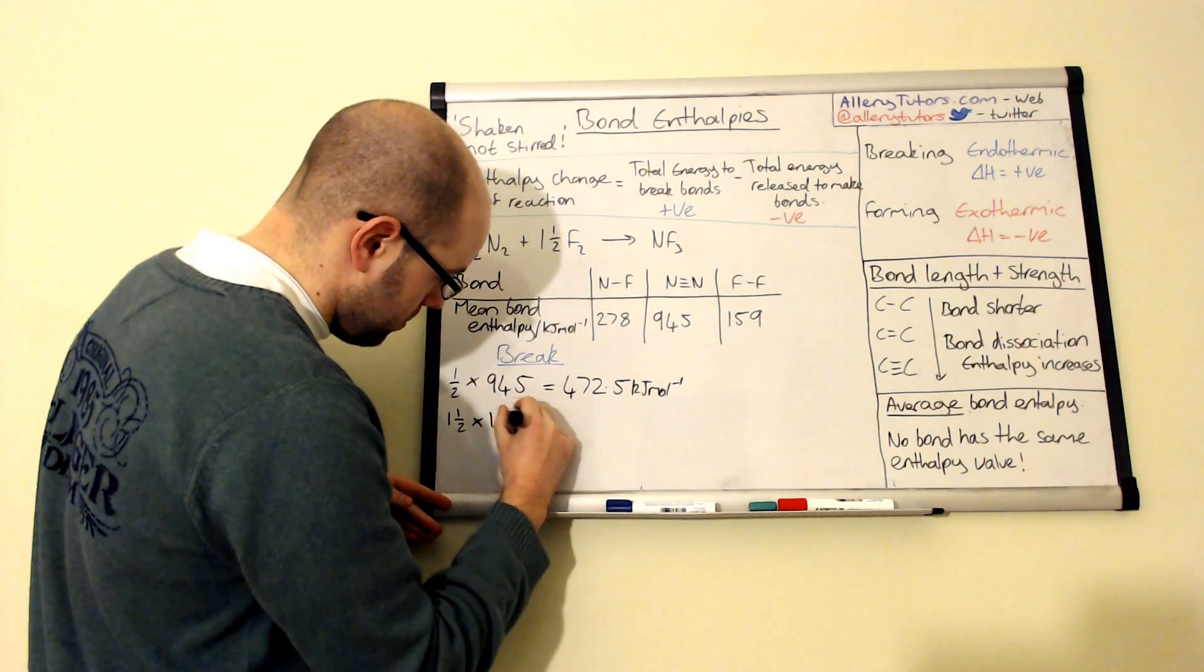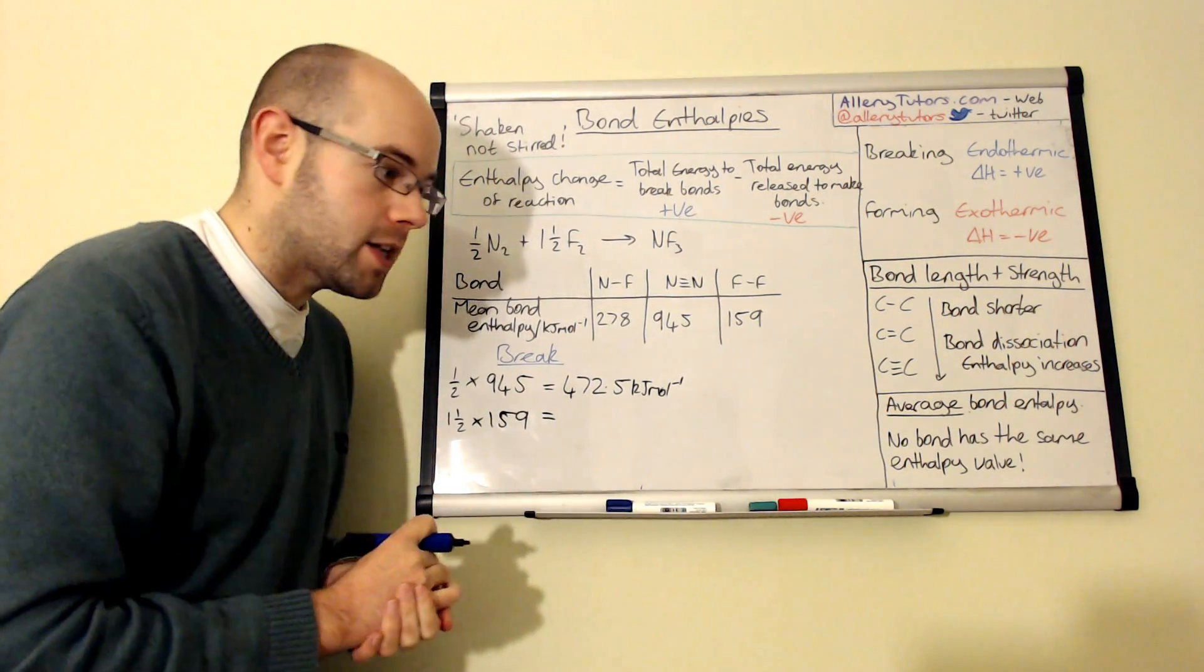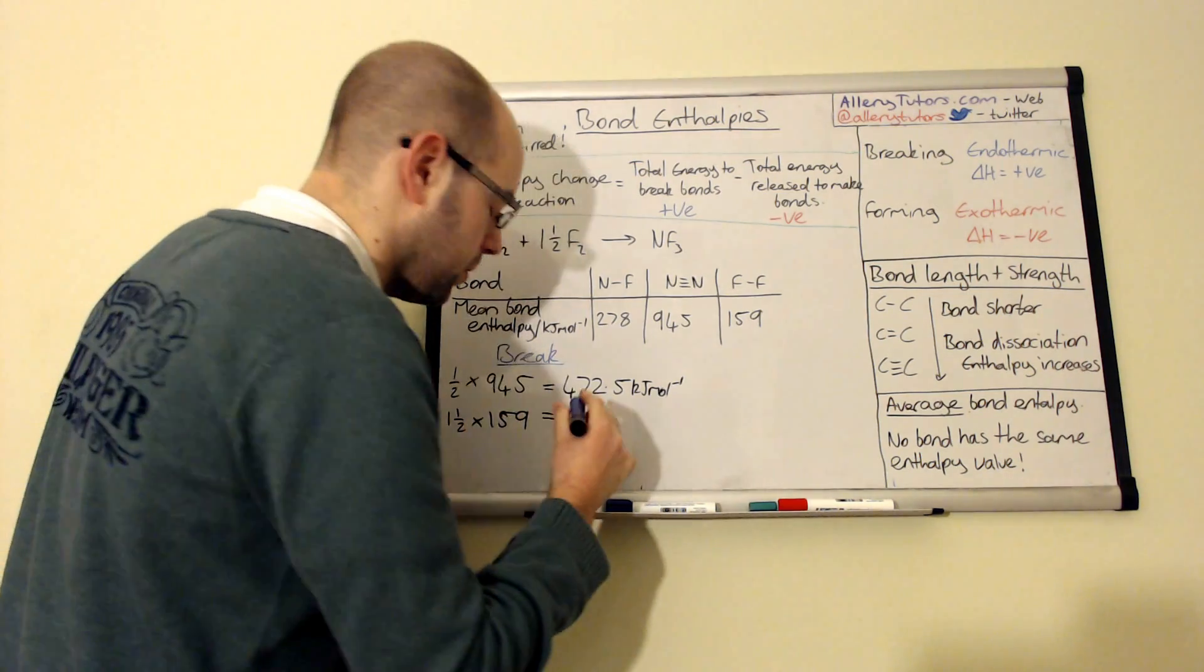And we've also sorted that one out. We've also got one and a half F2, so there's our F-F bond. It's got an enthalpy per mole of 159. So we're going to do one and a half times by 159, because that's the number of moles that we have of F2. And if we put that into our calculator, then we should get 238.5.